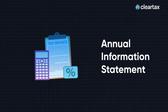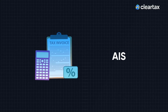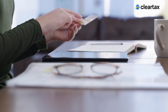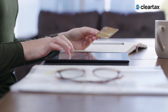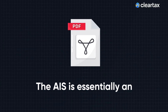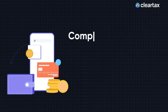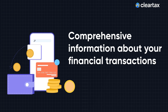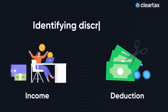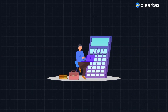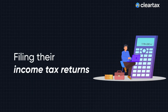The Annual Information Statement or AIS is a consolidated statement that the Income Tax Department provides to taxpayers. It contains information about all the transactions carried out by taxpayers throughout the financial year. The AIS is essentially an upgraded version of Form 26-AS and is designed to provide more comprehensive information about your financial transactions. It helps in identifying discrepancies in income or deductions, allowing taxpayers to rectify them before filing their income tax returns.